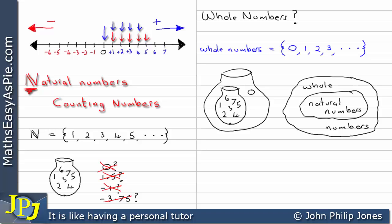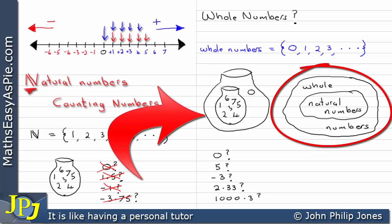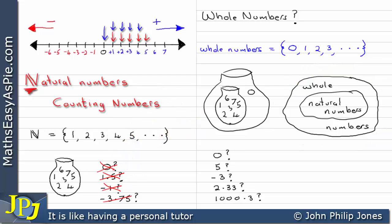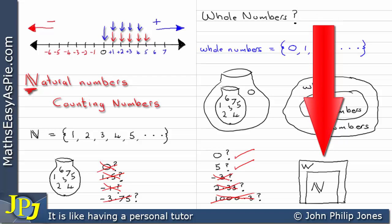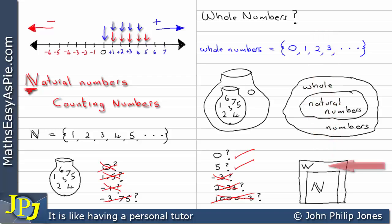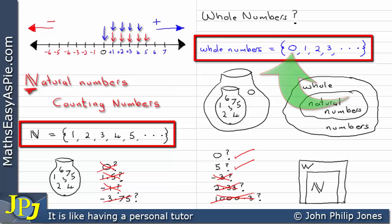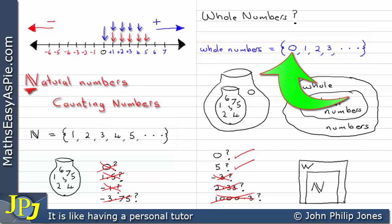Now let's ask: are zero, five, minus three, 2.33, and 1000.3 whole numbers — would they be allowed into this bag? Well, zero is, five is, minus three isn't, 2.33 isn't, and 1000.3 is not. Here's another way to represent natural and whole numbers: a rectangular area for the natural numbers contained within a larger rectangular area for the whole numbers. The difference between whole numbers and natural numbers is simply that whole numbers include the extra zero, and contain everything else the natural numbers have.